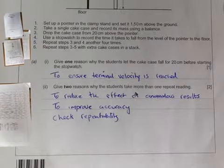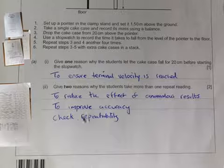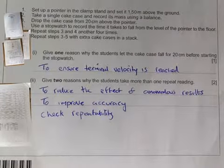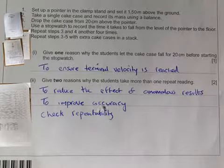Give two reasons why the students take more than repeat readings. To reduce the effect of anomalous results, to improve the accuracy, to check repeatability. They're the ones you always remember. Sometimes accuracy isn't enough, so to reduce the effect of anomalous results is probably your top answer there. And then check repeatability is always in there.